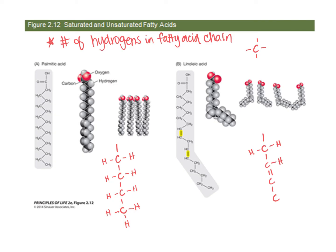That carbon now has four bonds: one, two, three, four. In reality, I could add the hydrogen to either side of the double bond, and the number of hydrogens doesn't change but the structure does. If the hydrogens are on opposite sides of the double bond, this is referred to as trans fats. If the hydrogens are on the same side, this is referred to as cis fats.